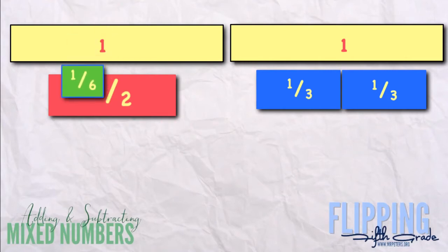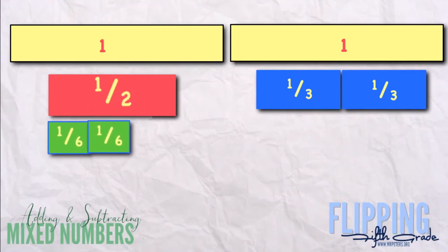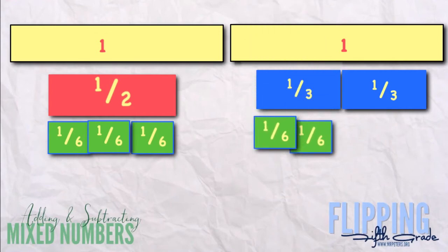So we're going to convert my halves to three-sixths. And I'm going to convert each of my thirds to two-sixths.